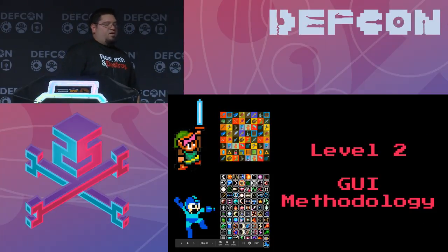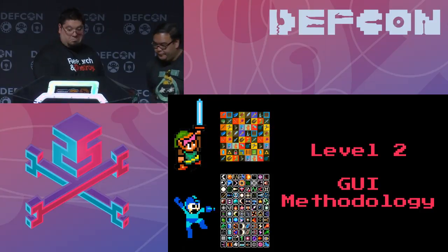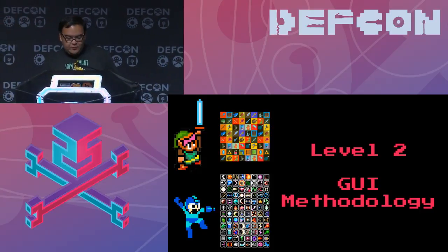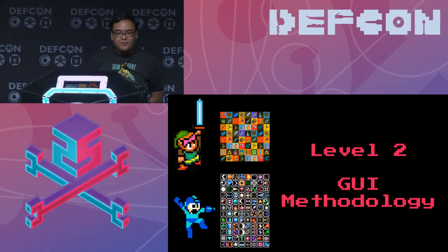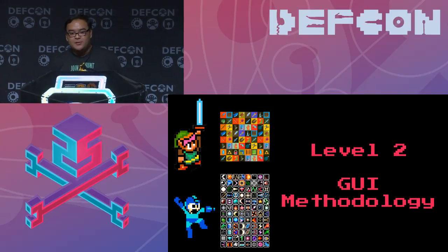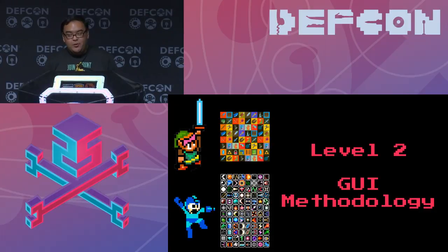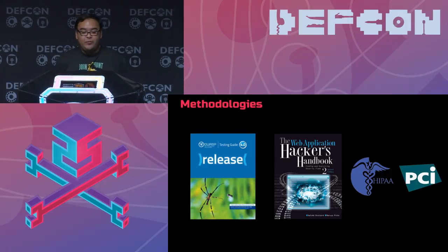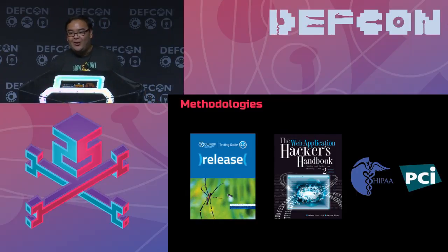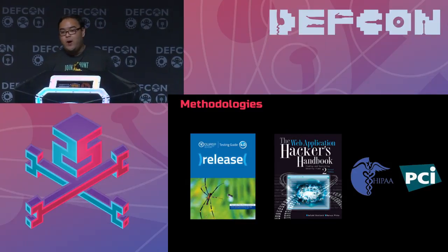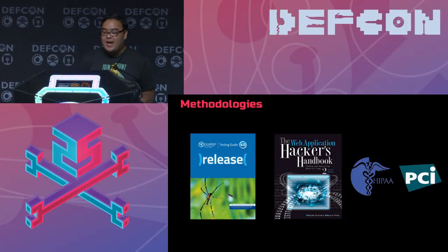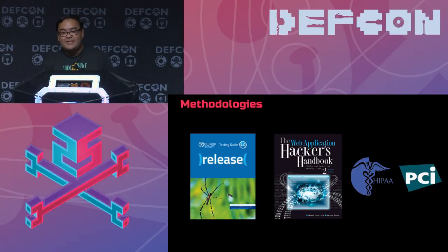The next tool is the GUI methodology part. A lot of you are pen testers or vulnerability assessors, and when you're doing your testing you're going by a methodology — unless you're some kind of YOLO hacker. You'll use things like the OWASP Testing Guide, the Web Application Hacker's Handbook, or standards like HIPAA or PCI.